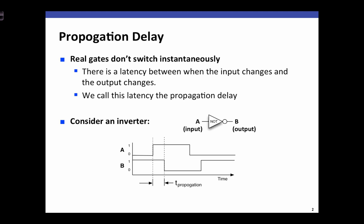In this video I'm going to explain the basics of propagation delay. Propagation delay is the idea that real gates don't switch instantaneously — that there's some time between when we change the input to a circuit and its outputs change. These are due to the fact that our gates are built out of real materials and electrons can't propagate through these circuits instantaneously.